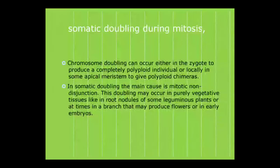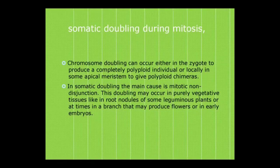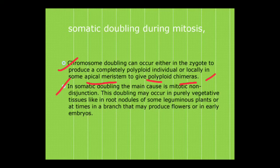What do we mean by somatic doubling during mitosis? It is chromosome doubling that can occur either in the zygote to produce a completely polyploid individual, or locally in the same apical meristem to give a polyploid chimera. In somatic doubling the main cause is mitotic non-disjunction. This doubling may occur in purely vegetative tissues like root nodules in some leguminous plants, or in a branch that may produce flowers, or in early embryos.